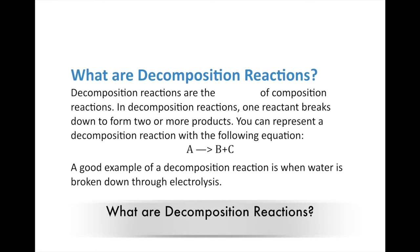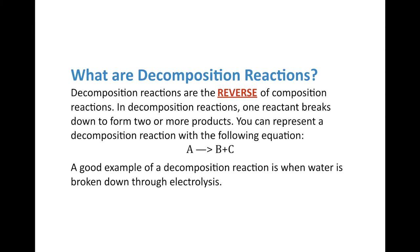The second type is decomposition reactions. As you could probably guess, they're the reverse of composition reactions. In decomposition reactions, one reactant breaks down to form two or more products. You can represent a decomposition reaction with the equation A yields B plus C — substance A breaking down to form substances B and C.